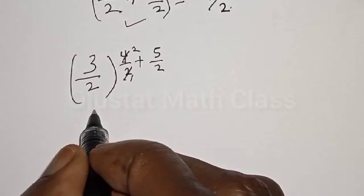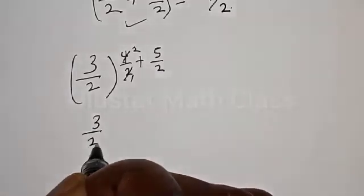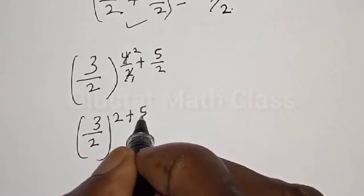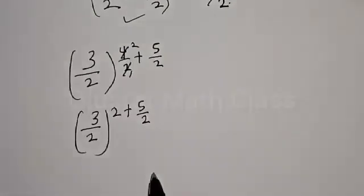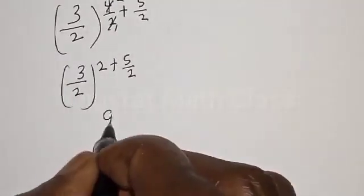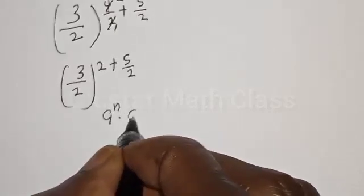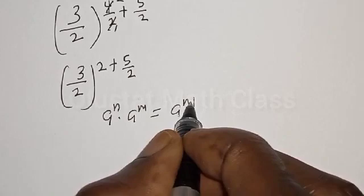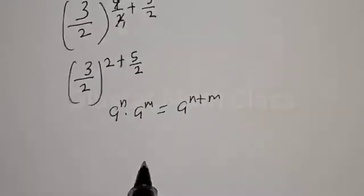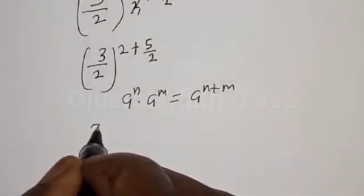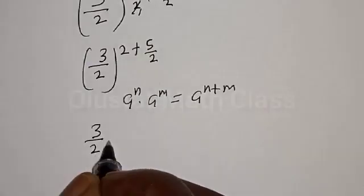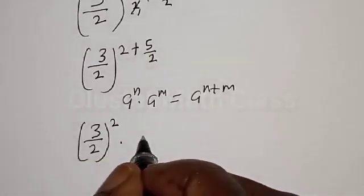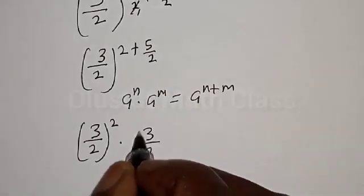We have 3 divided by 2, all raised to the power 2 plus 5 divided by 2. Remember, if we have a raised to the power n plus m, that equals a raised to the power n multiplied by a raised to the power m.